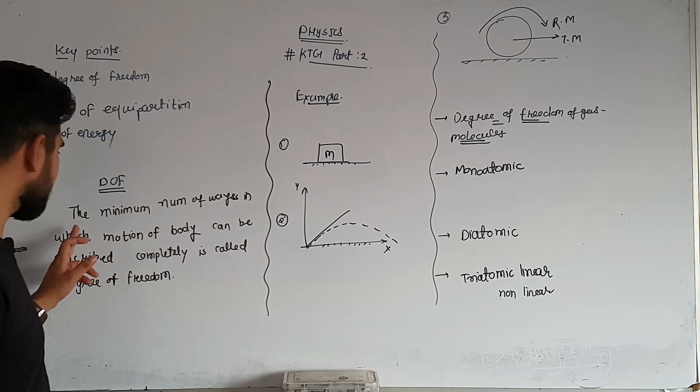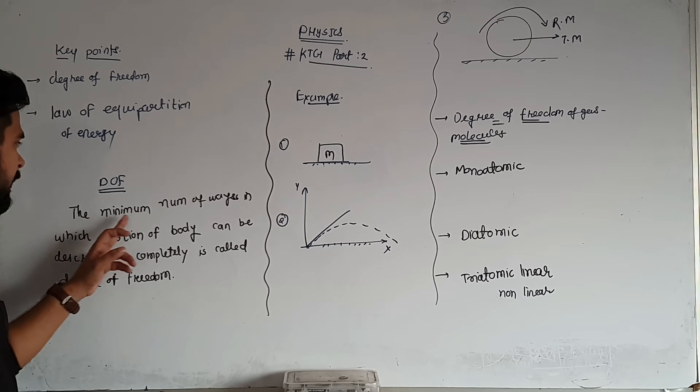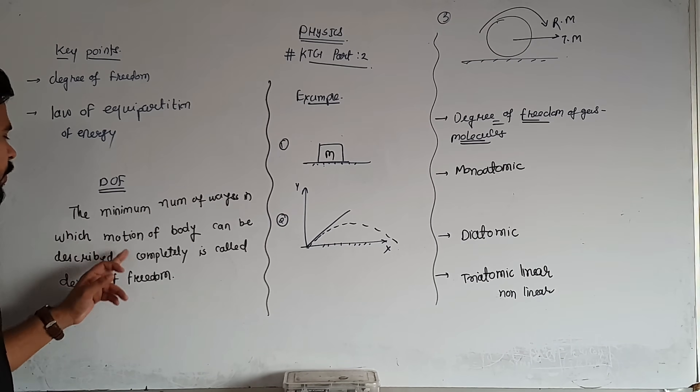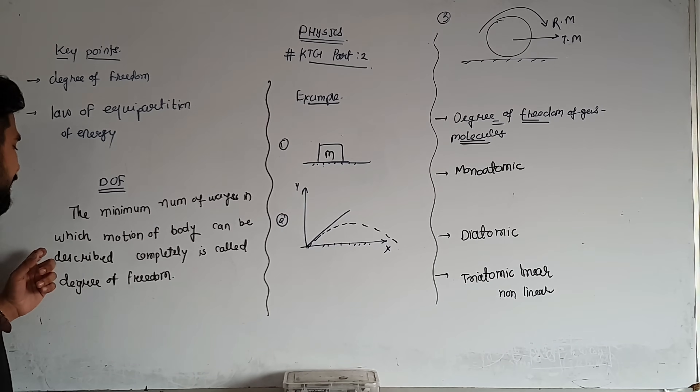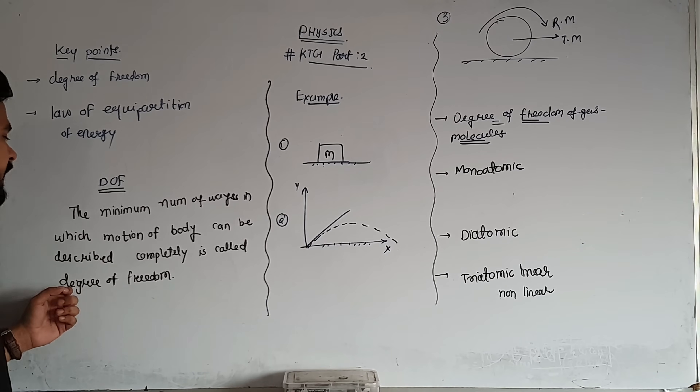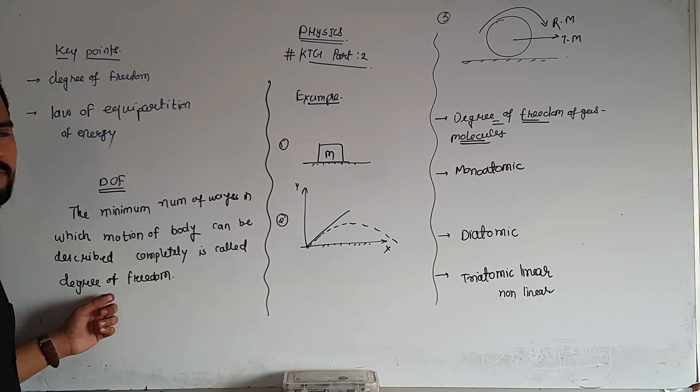The perfect definition: the minimum number of ways in which the motion of a body can be described completely is called degrees of freedom.